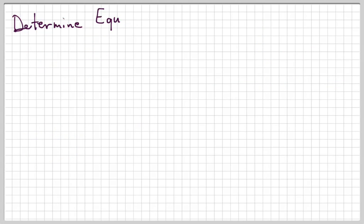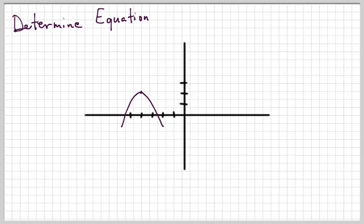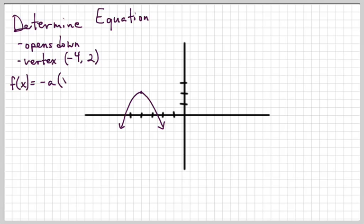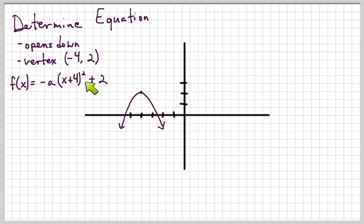Here's one more: determine the equation. This one opens down, so its A will be negative. The vertex is negative 4 comma 2. We can write: negative A times X minus negative 4 — which becomes X plus 4 — squared, plus 2. This is our H and K; remember H always shows the opposite sign inside the function.